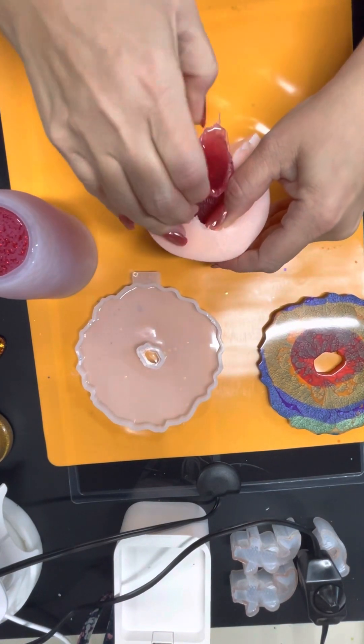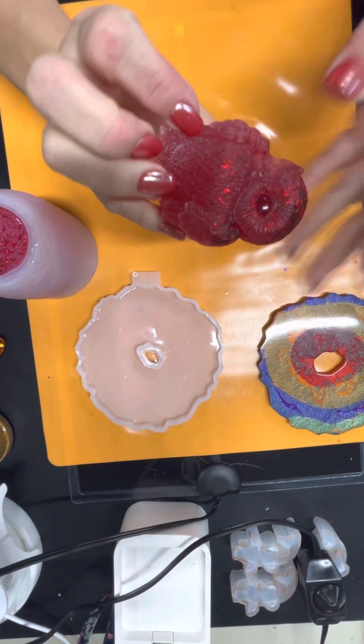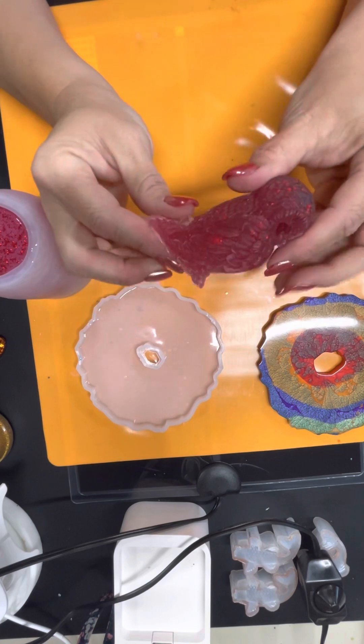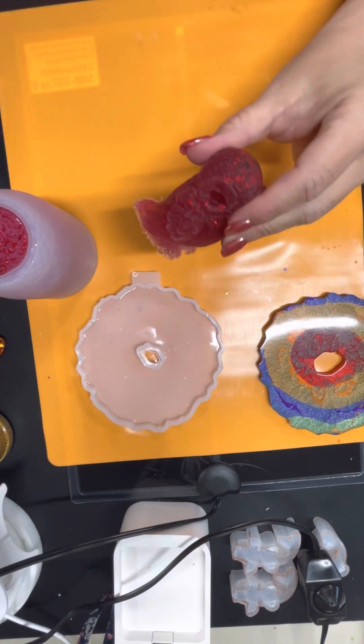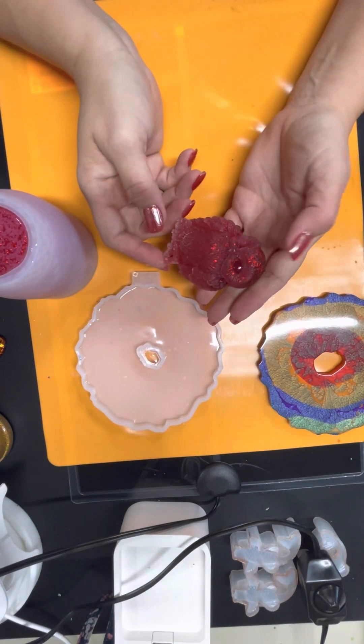Now, this is a mold I got off of Etsy and it is an owl mold. It's supposed to be a snow owl. As you can see where it splits, that's where I get that little seam, and you have to go back in and touch it up, trim it off.